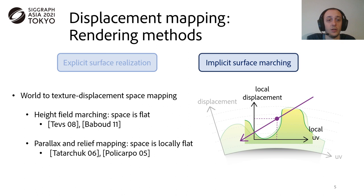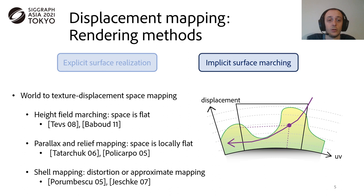Parallax mapping and relief mapping work on a general case, but under the assumption that the texture displacement space is locally flat, thus approximating the complex mapping by a trivial one. Finally, shear mapping approaches either suffer from distortions when using a simple mapping, or have to rely on non-linear ray-marching to approximate the true, complex mapping. On the contrary, our method only relies on a texture-to-wall space mapping, which is always explicit and well-defined.